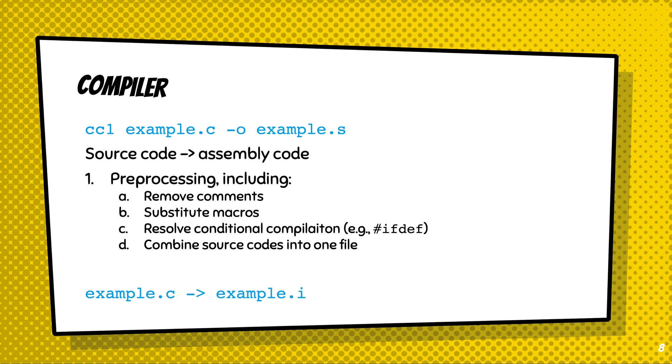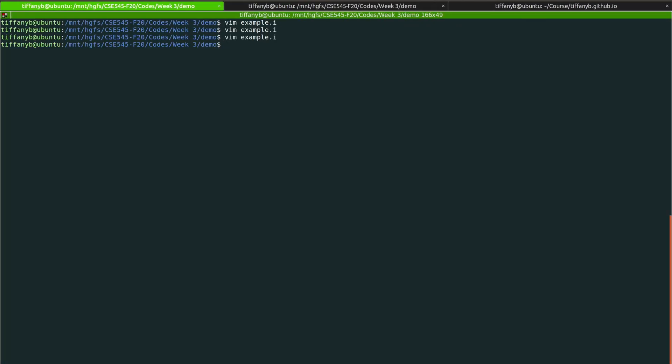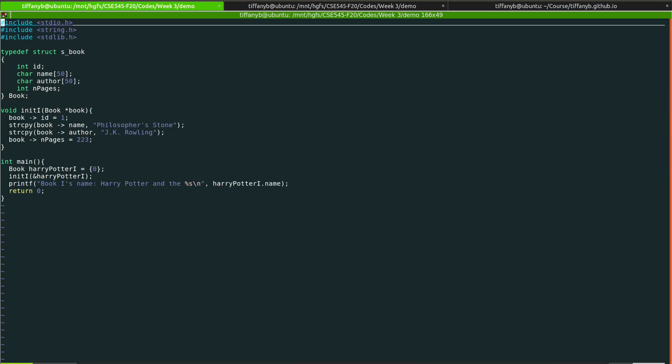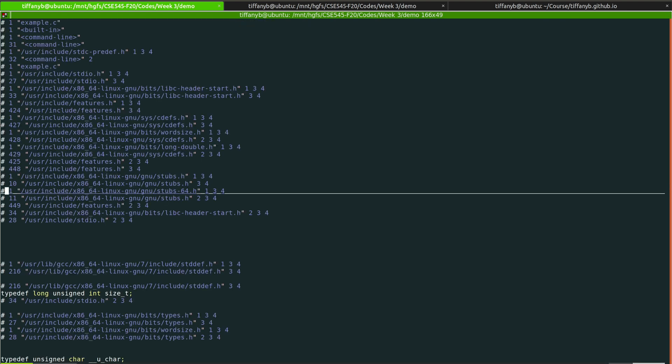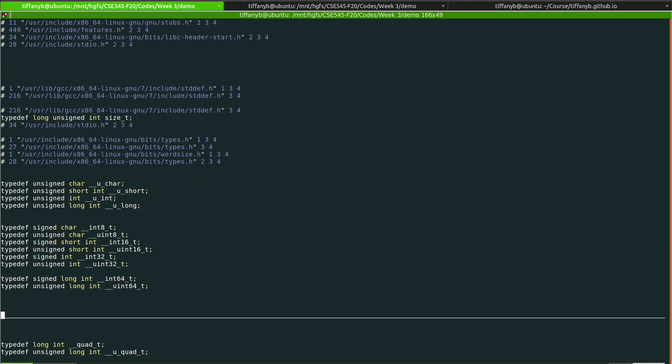Now let's take a look at example.i. This is the source code of the file. In example.i, we can see that there are many hashtags which denote the line location of the file and the flags of the file.